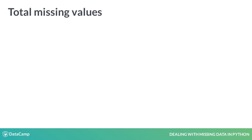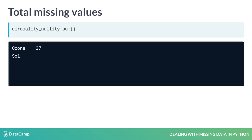We can then apply the method sum on air_quality_nullity to obtain the number of missing values in the dataframe. This method sums the trues and falses, as true is numerically 1 and false is 0.